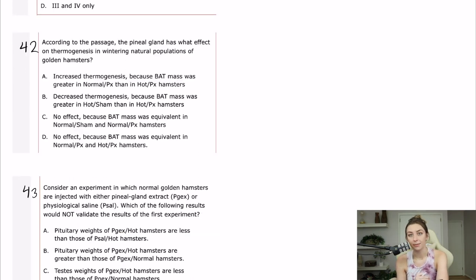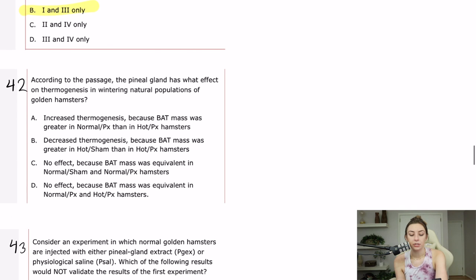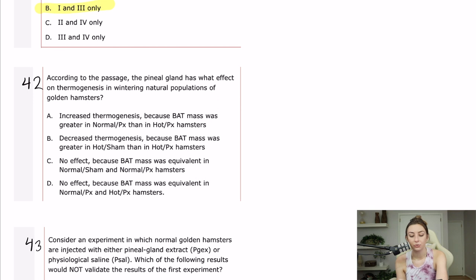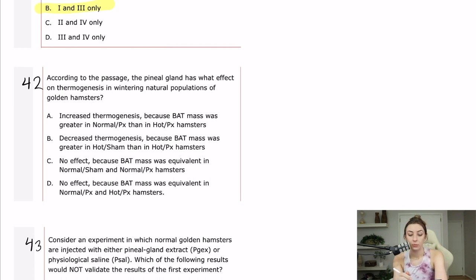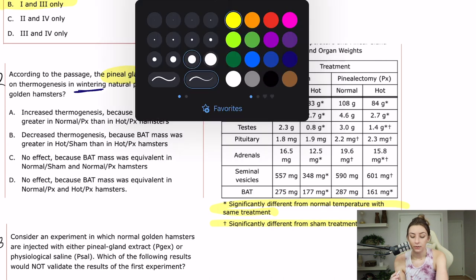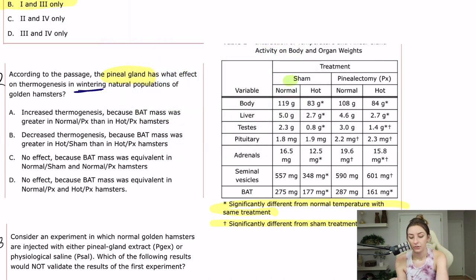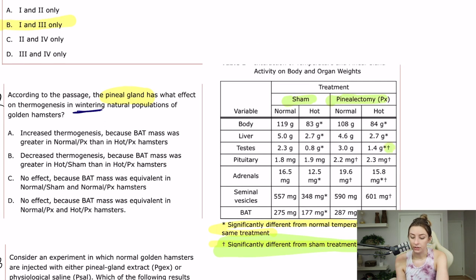Now we get into questions that are not really basic science related — they're more related to the table. Question 42 asks: according to the passage, the pineal gland has what effect on thermogenesis in wintering natural populations of golden hamsters? This asks us to interpret the results from the table. We're looking at the pineal gland's effect, so we want to compare sham versus pinealectomy, and we'll look at the crosses — those indicate a statistically significant difference between sham and pinealectomy at the same temperature.